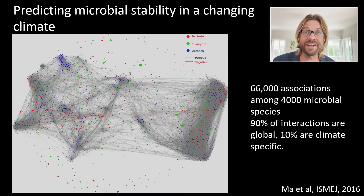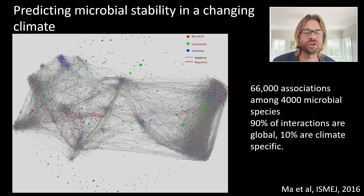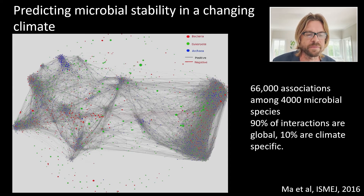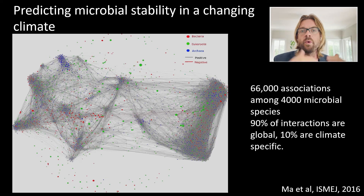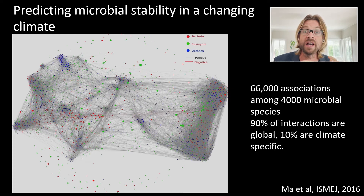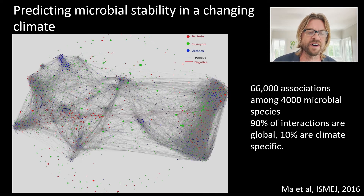We developed a network map examining co-occurring abundance and proportional correlations. This map only has correlations greater than 0.7 — so 70% correlated proportional changes over space — and we have over 66,000 associations between some 4,000 microbial species. Interestingly, 90% of these interactions are globally distributed around that climate gradient, meaning no matter what part of the soil you're in, there are unique associations interacting between bacteria and fungi, especially in forest soils, which have a defined association.